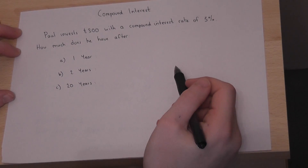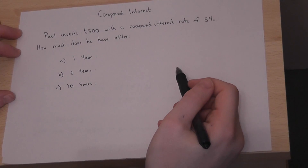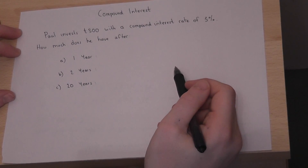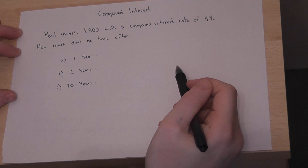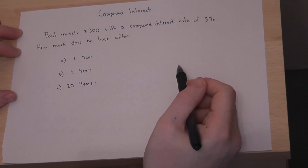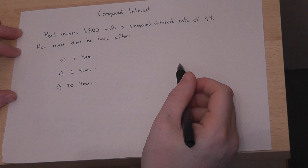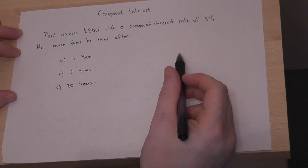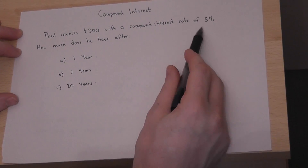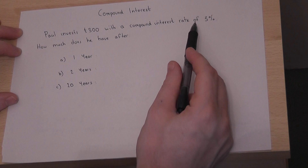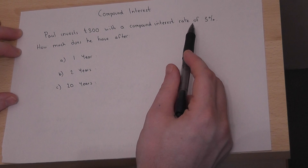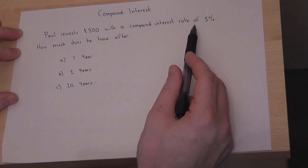This video shows quickly how to increase by a percentage on a calculator. Suppose Paul invests £300 with a compound interest rate of 3%. This means that every year his amount goes up by 3%.